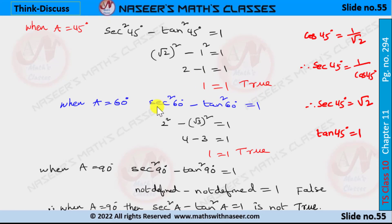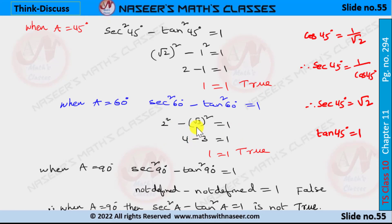When a = 60°, the identity sec²60° − tan²60° = 1. We know sec60° = 2 and tan60° = √3. Substituting: 2² − (√3)² = 1, which gives 4 − 3 = 1, therefore 1 = 1. This is also true for a = 60°.